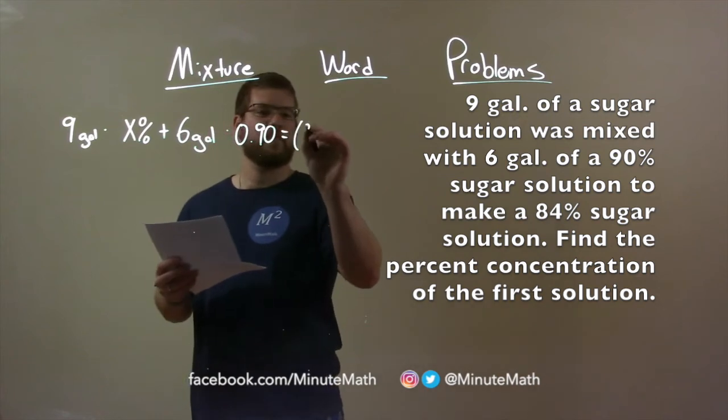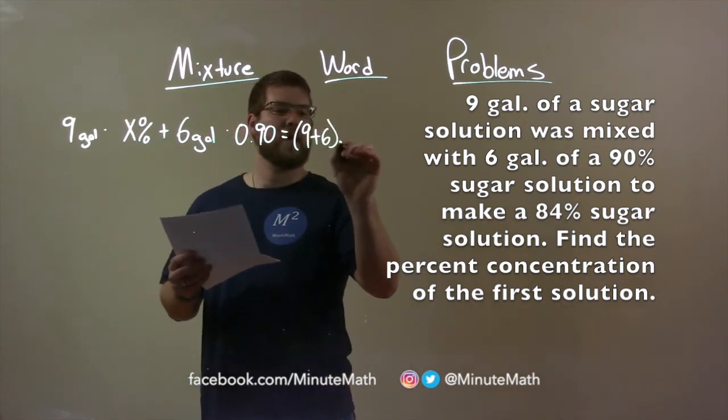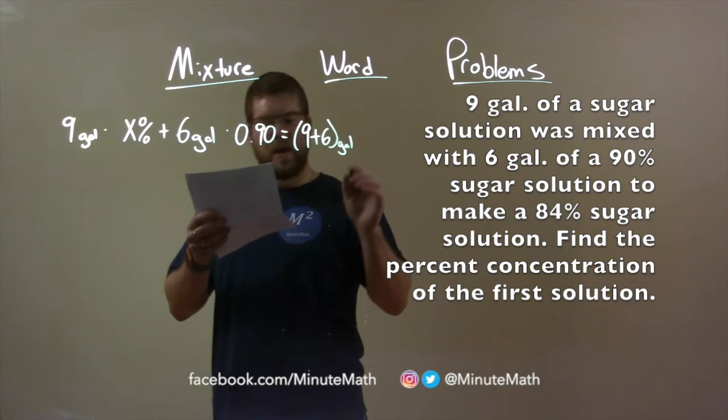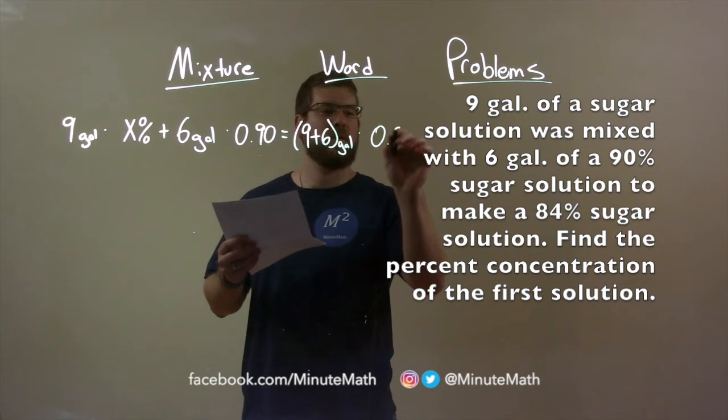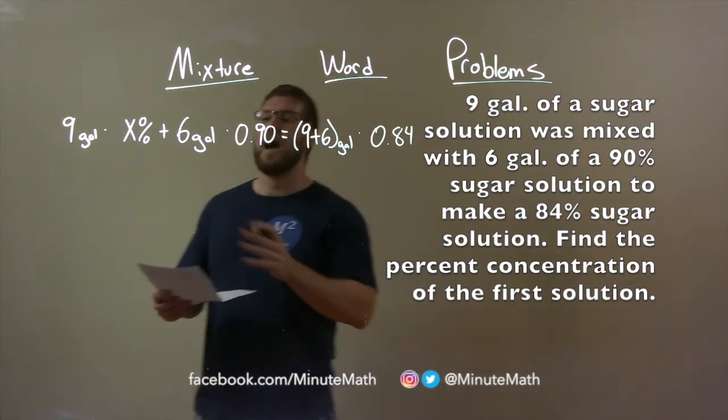That's going to equal our total solution. If we add 9 plus 6, that's our total gallons: 15. And that final concentration is 84%, so as a decimal, 0.84. Now we have an equation.